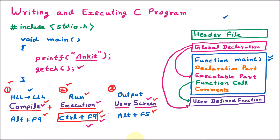To use the getch function, we need a header file. That header file is conio.h. Conio is the header file where the getch function is available. Conio stands for console input output header file. We apply dot h, which stands for header file, then less than and greater than signs meaning it is a system header file. To include it into the program, we write hash include. So hash include will include conio.h. Then by simply pressing Ctrl F9, our code will first compile, then execute, then run. On the output screen we will have Ankit.